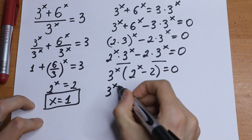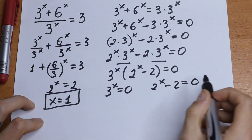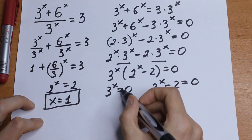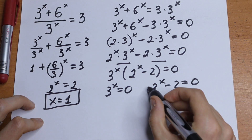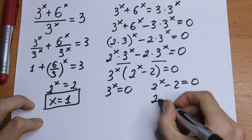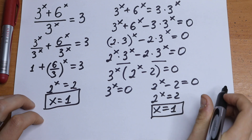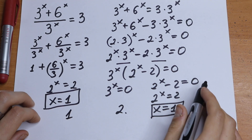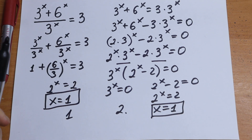So we have a product equal to 0, meaning this one equals 0 and this one equals 0 as well. The first has no roots because 3 to the power x never equals 0 or a negative value. So we are interested in the second equation: 2 to the power x equal to 2, giving x equal to 1. And this is the answer — two methods, the first one and the second one. Which one do you prefer? Write your suggestion in a comment.